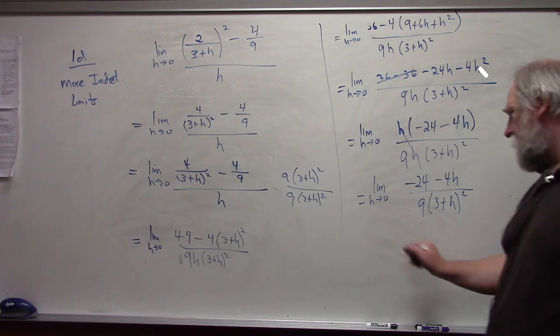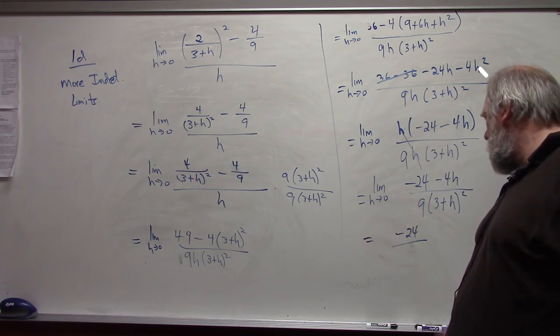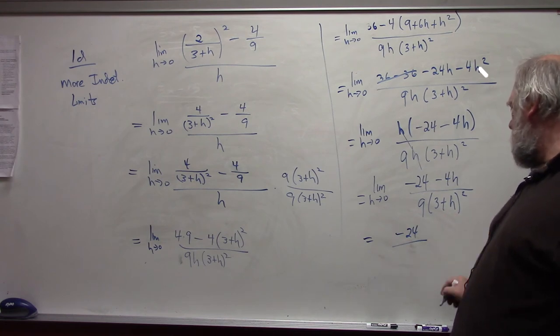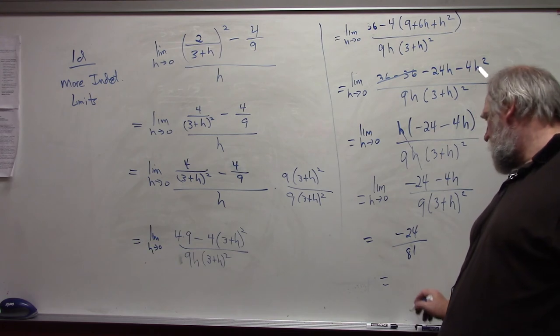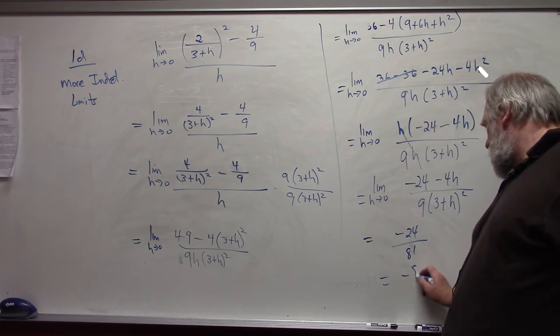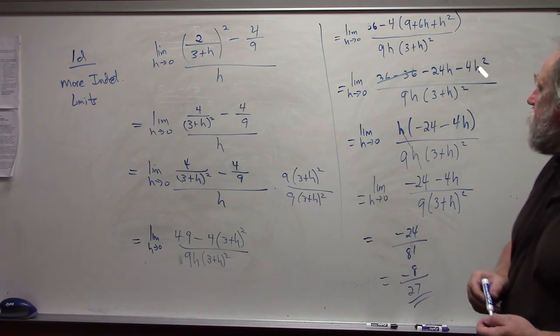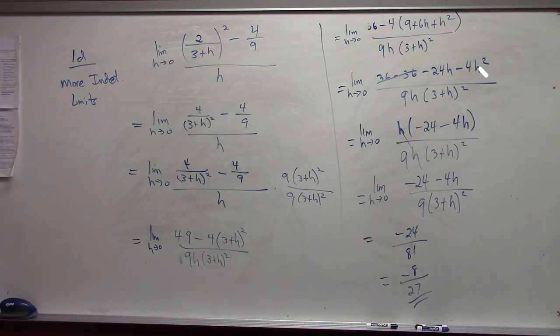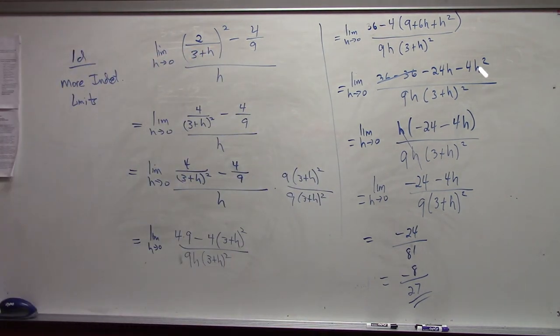We can evaluate, and we get then negative 24 over 9 times 9, which is 81. And then to reduce it, I end up with negative 8 over 27.